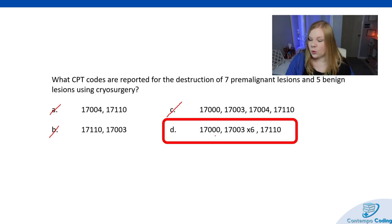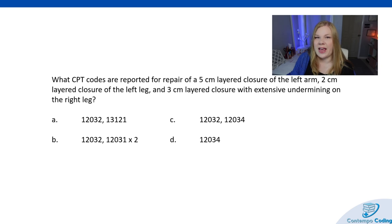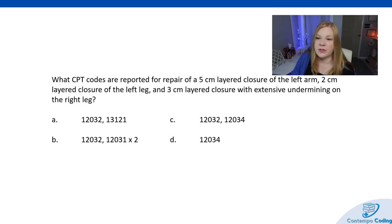Case 5 demonstrates how we add on for repair codes. The question: what CPT codes are reported for a 5 cm layered closure of the left arm, a 2 cm layered closure of the left arm, and a 3 cm layered closure with extensive undermining on the right arm?